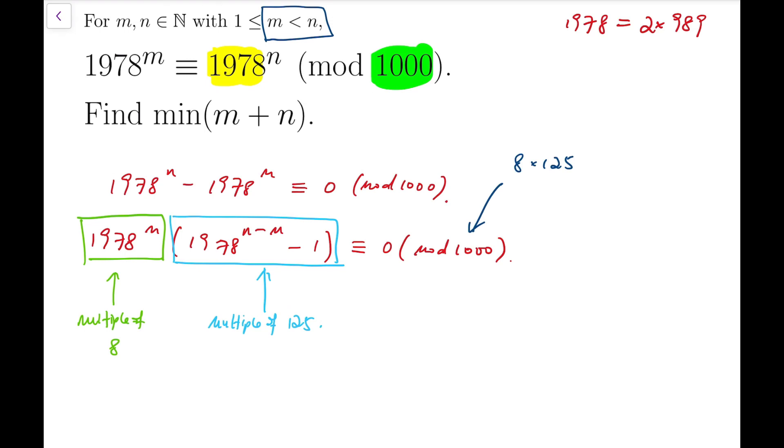Then we can achieve a multiple of 8. So that means we will have m to be at least 3, and 1978^(n-m) is congruent to 1 mod 125.